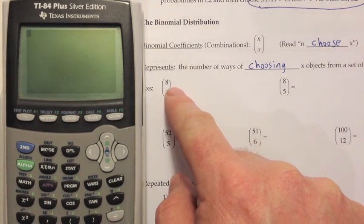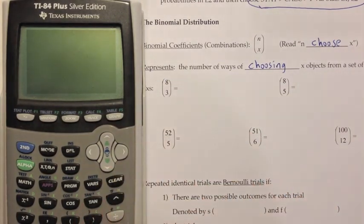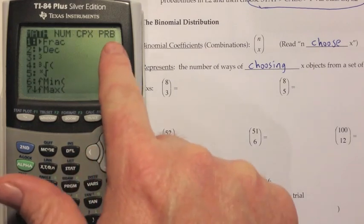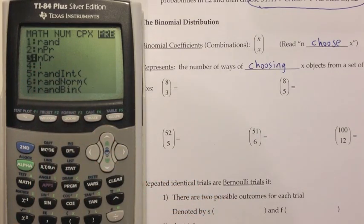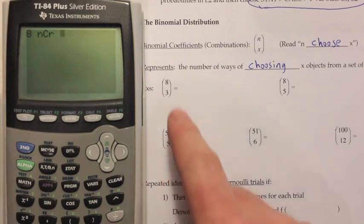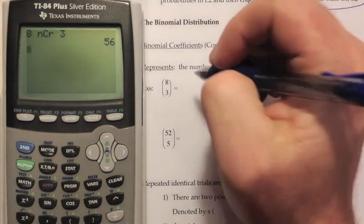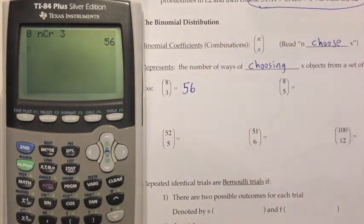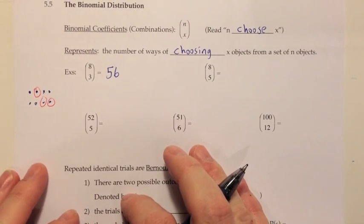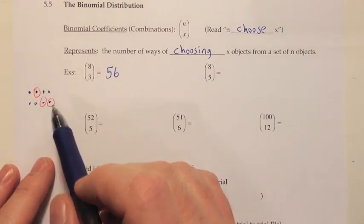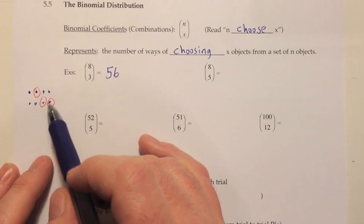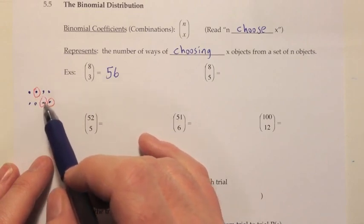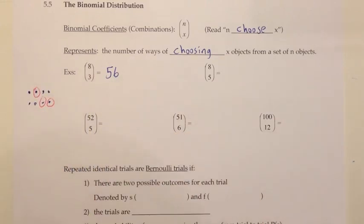You have to type things just like you'd say them, so since this is 8 choose 3, we're going to hit the 8 key first, then for 'choose' we have to hit the math button, go over to the probability menu, and then choose is the nCr, number 3. So I've done the 8, now I'm doing choose, then I type the 3, and it tells me there are actually 56 different ways of choosing 3 things from a group of 8 — even when I don't care what order they're in, just which 3. So that's 1 and there's 55 others like it.